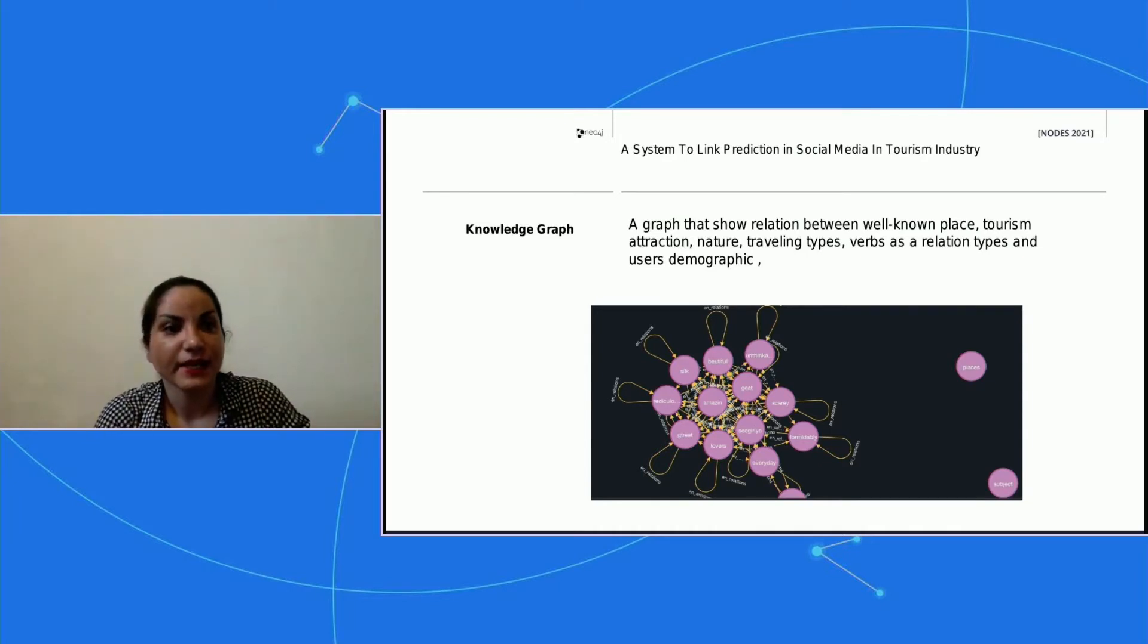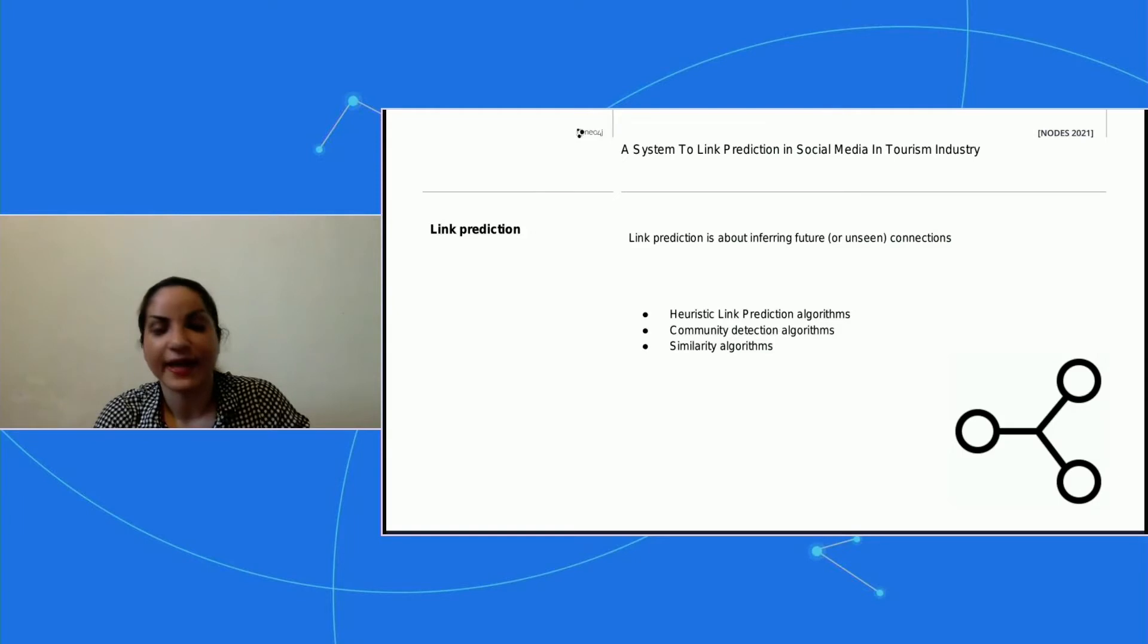At the end of this phase I had a knowledge graph, I had a graph. No, it's not knowledge because I need relations. But at this phase I just extracted some nodes and some important nodes.